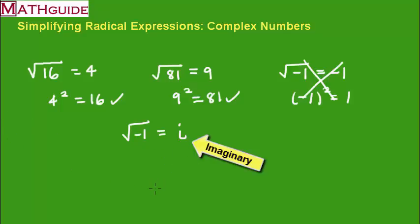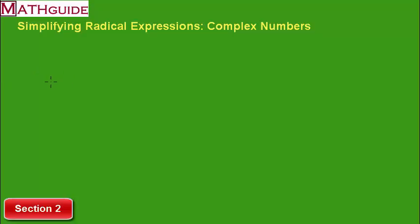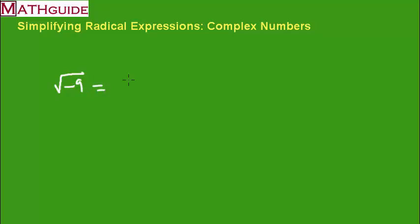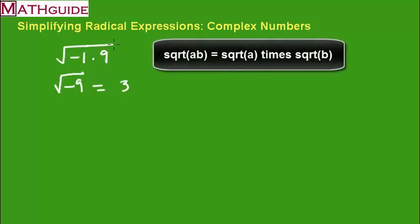Let's keep that in mind as we work on the next three sections. We're going to go over some easy problems. For our first problem, let's take the square root of negative 9. We look at this as the square root of negative 1 times 9. The square root of 9 is 3, and the square root of negative 1 is i. So the answer is 3i.